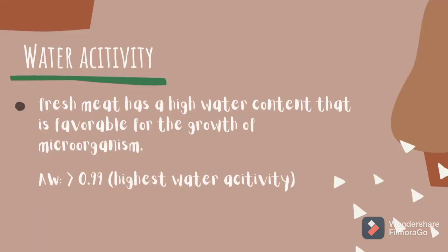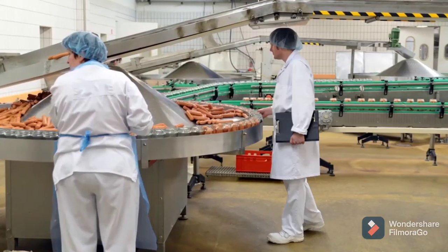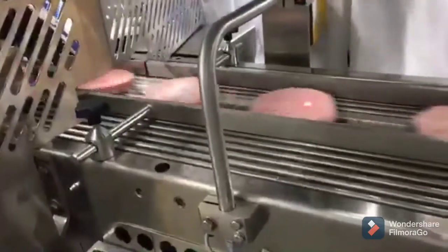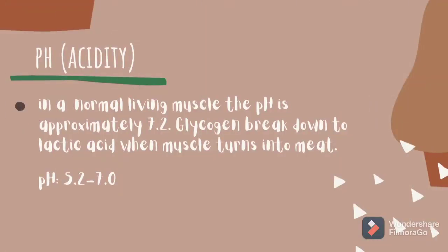Fresh meat has a high water content, which is favorable for the growth of microorganisms. The water activity of meat is higher than 0.9, which is the highest water activity in food. Meat also generally contains bacteria, including those that can cause disease. Equipment and tools used in the processing of meat can also become contaminated with microbes and spread to the raw meat.